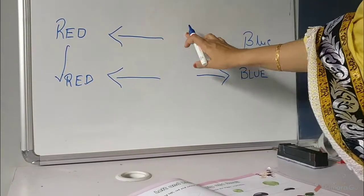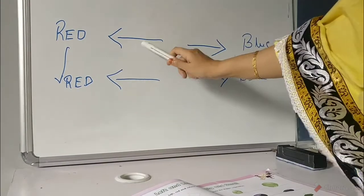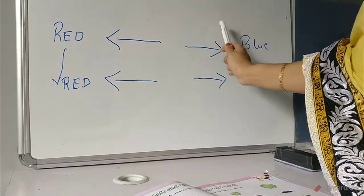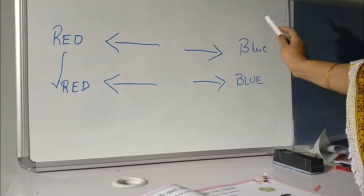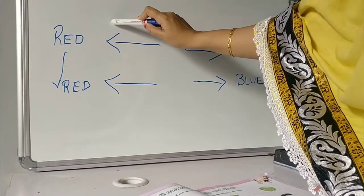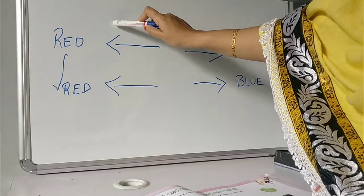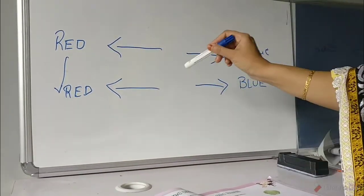So for today's homework, you will tell your mamas to draw arrows pointing right and left, and you will color the arrows. Arrows going towards right will be blue color, and arrows going towards left will be red color. Okay? Thank you.